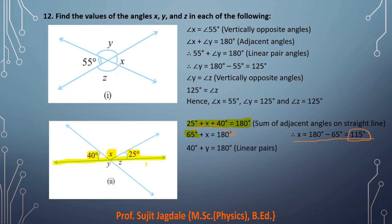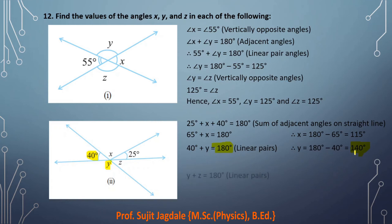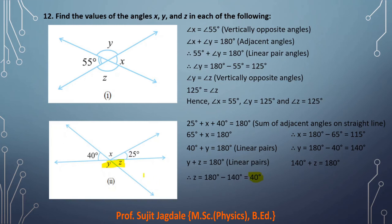Finding y: y and 40 degrees form a linear pair, so their addition is 180 degrees. Transposing, y equals 140 degrees. Then y and z form a linear pair, so their addition is 180 degrees, giving z equals 40 degrees. Alternatively, 40 degrees and z are vertically opposite angles, so z equals 40 degrees. Therefore x equals 115°, y equals 140°, and z equals 40°.